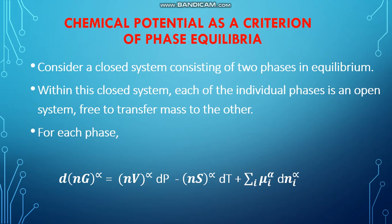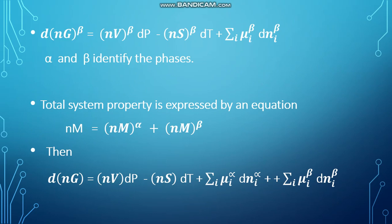For each phase, d(nG)^α = (nV)^α dP - (nS)^α dT + Σᵢ μᵢ^α dnᵢ^α. Similarly for the other phase, d(nG)^β = (nV)^β dP - (nS)^β dT + Σᵢ μᵢ^β dnᵢ^β.